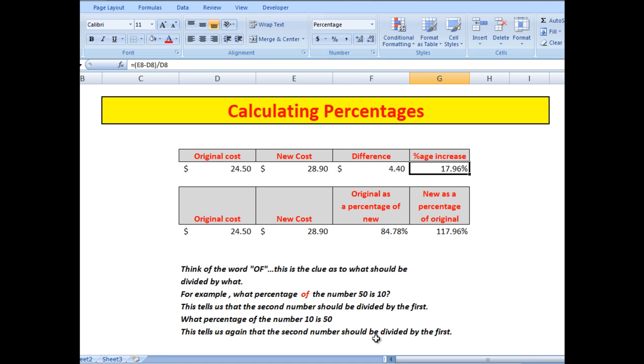So here is an original cost again of $24.50 with a new cost of $28.90. I want to calculate what is the original cost as a percentage of the new. So what I've had to do here is to say in the formula bar equals D11 divided by E11.